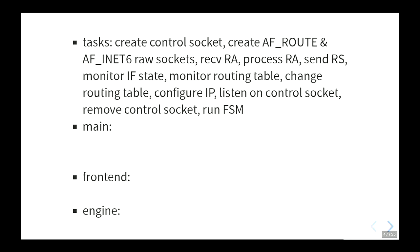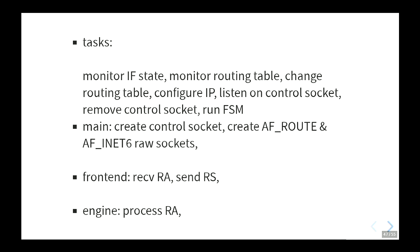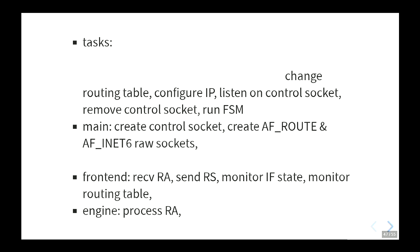These are basically all the tasks SlackD needs to handle. We have three processes: the main process creates the control socket and raw sockets, the front-end receives router advertisements and sends router solicitations, monitors interface state via the routing socket for flag changes and routing table changes. For example, if someone by hand deletes the default route, SlackD owns that part and will re-add it.